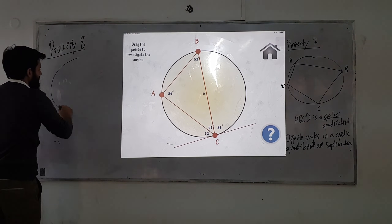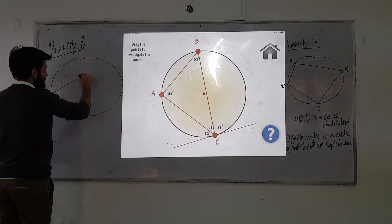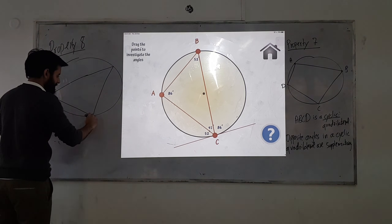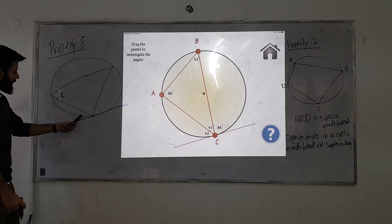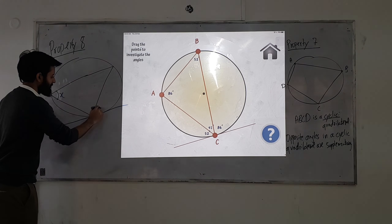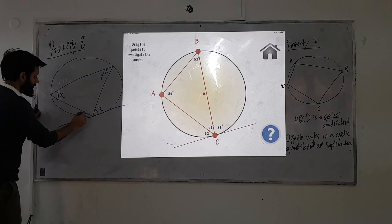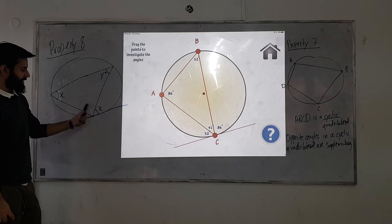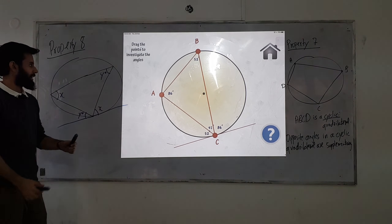This is property number eight. Let's draw this — we have a triangle, and if we make a tangent line here, then if this angle is x, this tangent angle will also be x. If the other angle is y, the remaining tangent angle will be y. And if you're not given x, it will be x plus y.